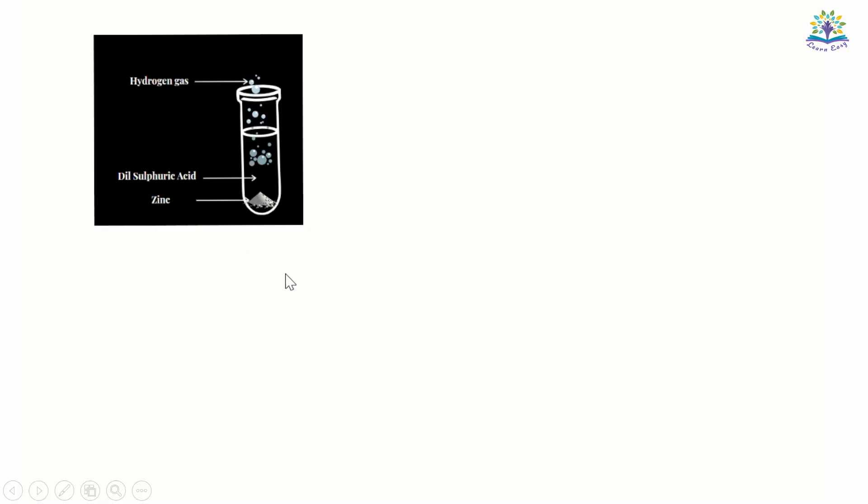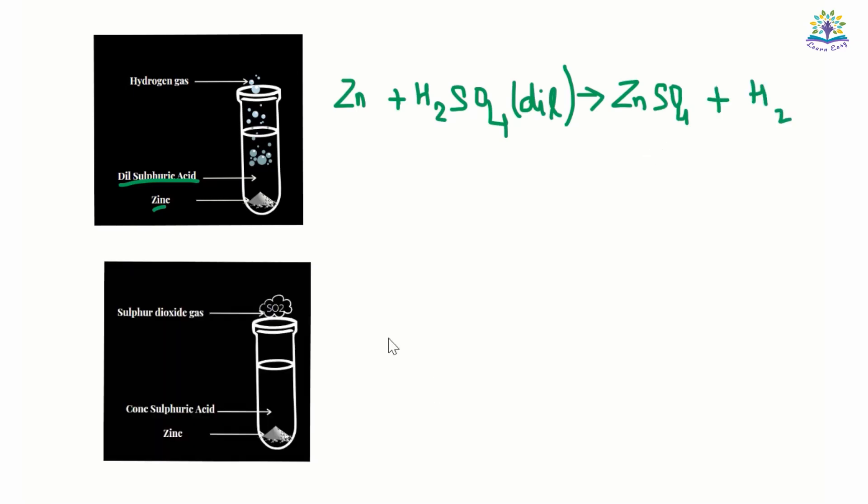When we add zinc to dilute sulfuric acid, zinc sulfate and hydrogen is formed. When we add zinc to concentrated sulfuric acid, zinc sulfate, water, and sulfur dioxide are formed.